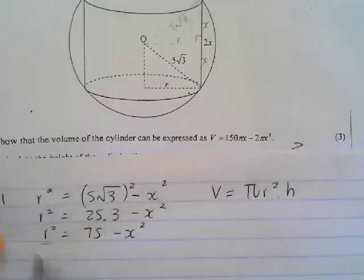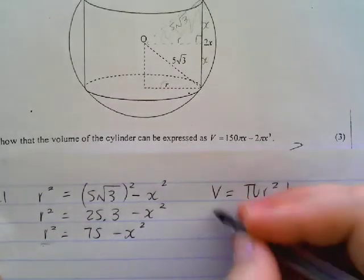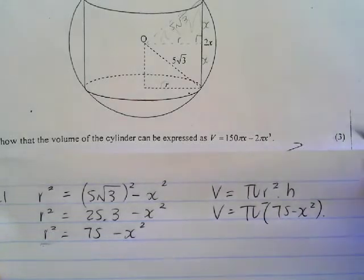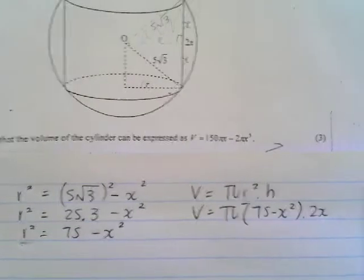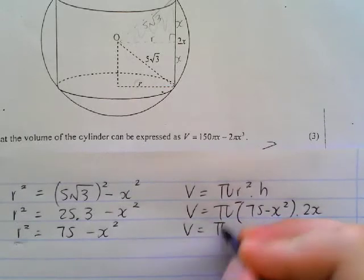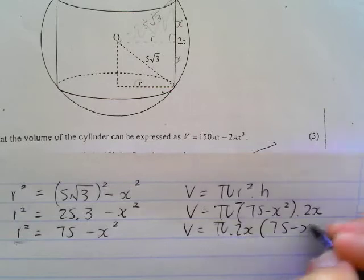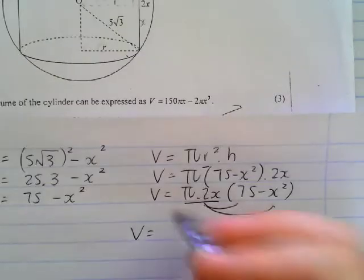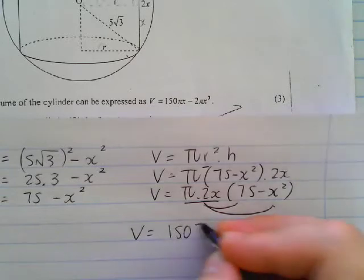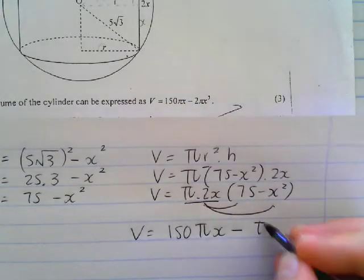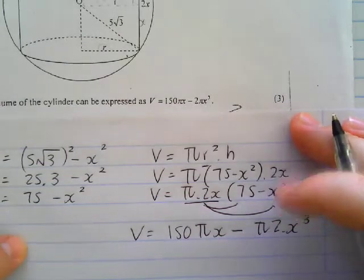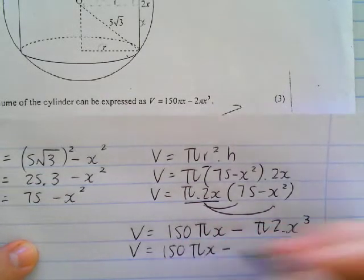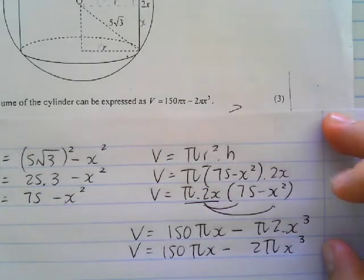If I've got R² over here, I might as well leave it as R², because I'm just going to substitute it back over there. So volume = π(75 - x²)(2x). In order to make life simpler, I'm going to say π times 2x and then leave the bracket of (75 - x²). Now when I times that into our bracket, I'm going to get the volume to be 150πx - 2πx³, which is very similar to our answer that we're aiming for. And we are done with 12.1.